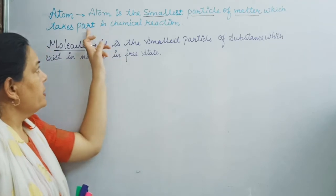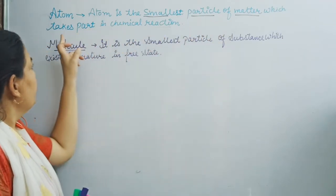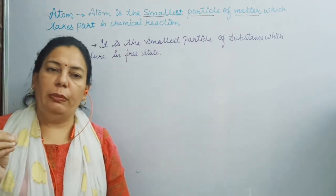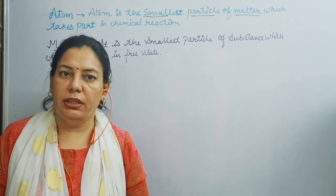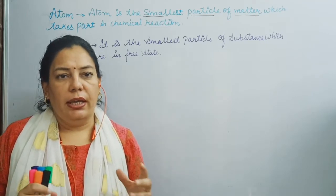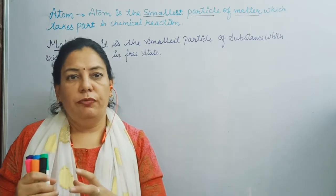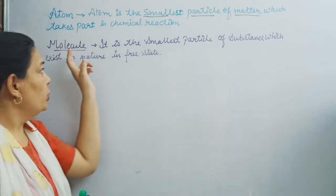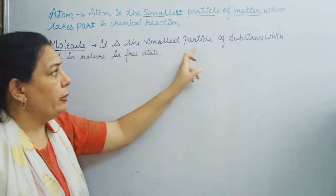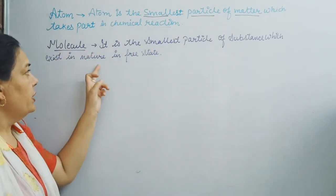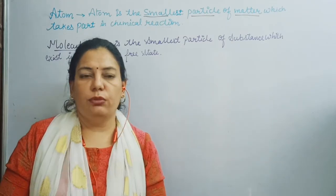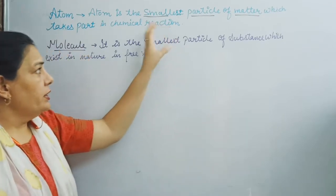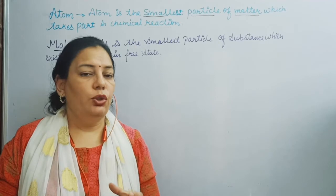The atom is the smallest particle of matter which takes part in a chemical reaction. Atoms cannot exist in nature in a free state. When atoms cannot exist in a free state, they exist in molecular form. A molecule is the smallest particle of a substance which exists in nature in a free state. When atoms react with each other, they form a molecule.